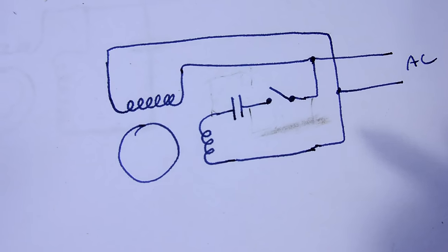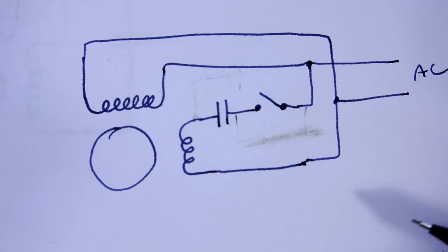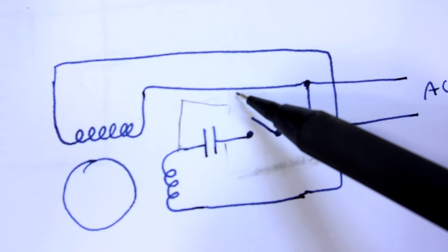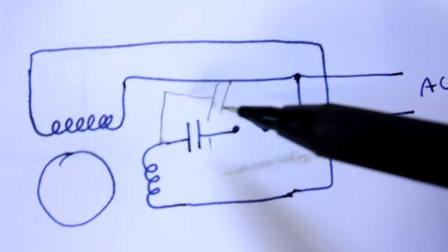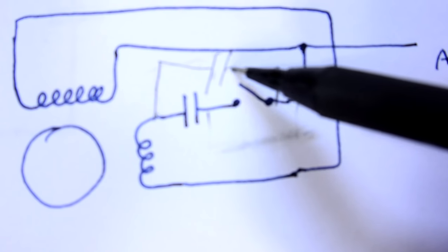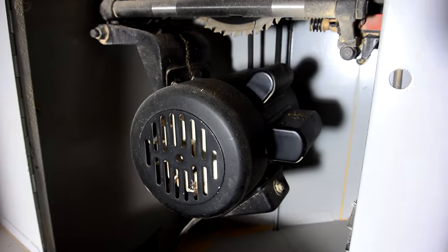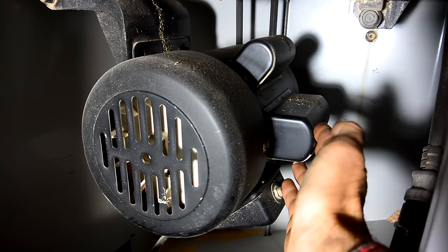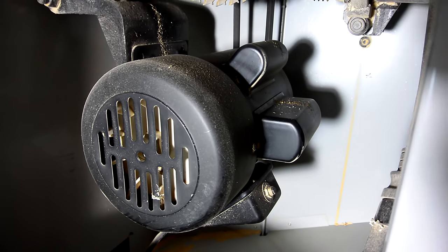Having said that there are some motors called capacitor start, capacitor run motors that have a beefier starter winding and then they have a second capacitor that is in parallel with the starter switch and the starter capacitor that stays engaged and that helps the motor run a little bit better. The motor in my table saw is that kind of motor and it's got two bulges on there one for a start capacitor the other one for a run capacitor.